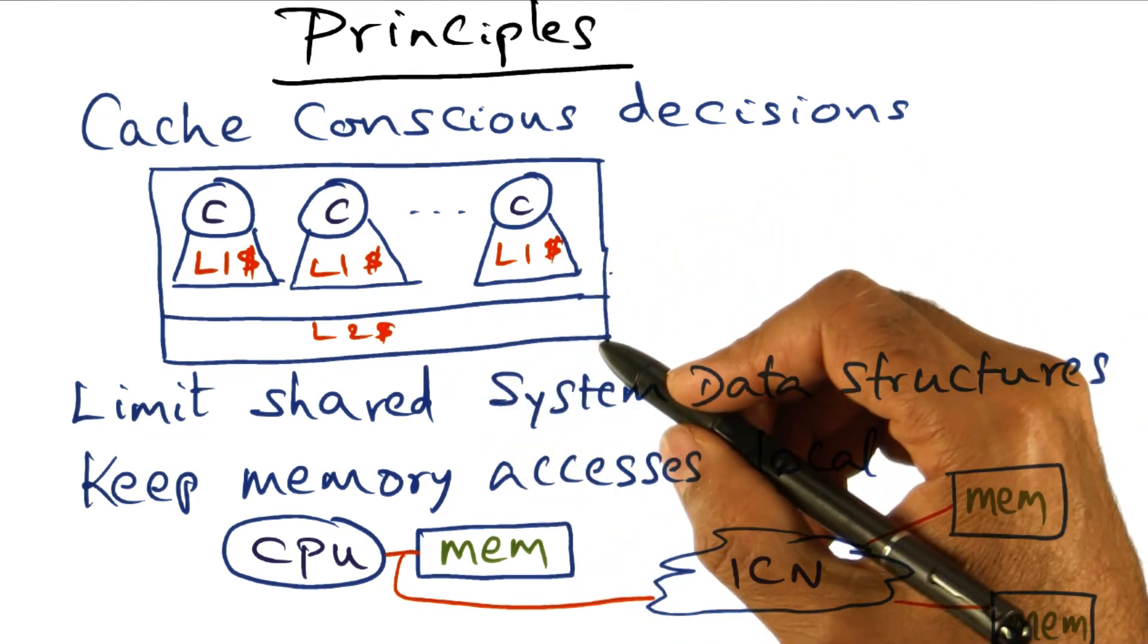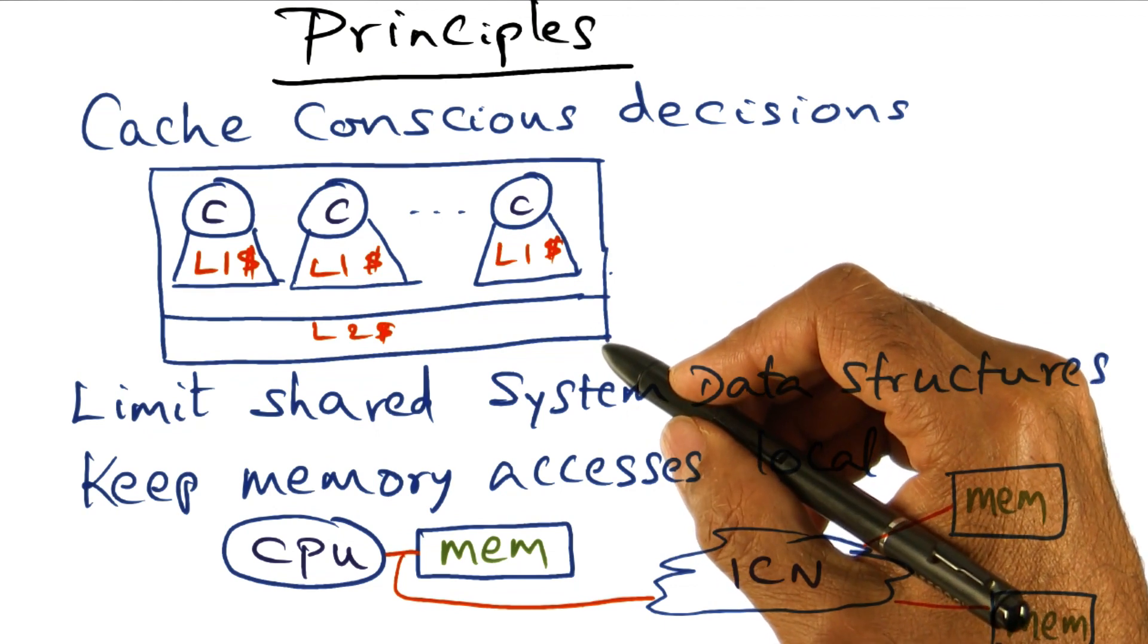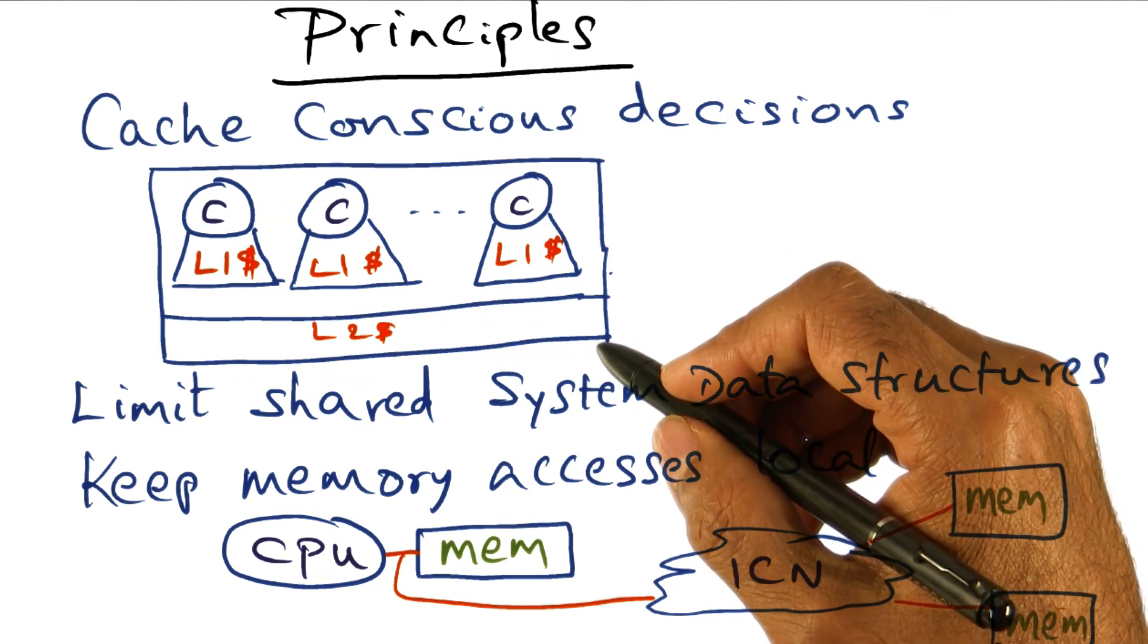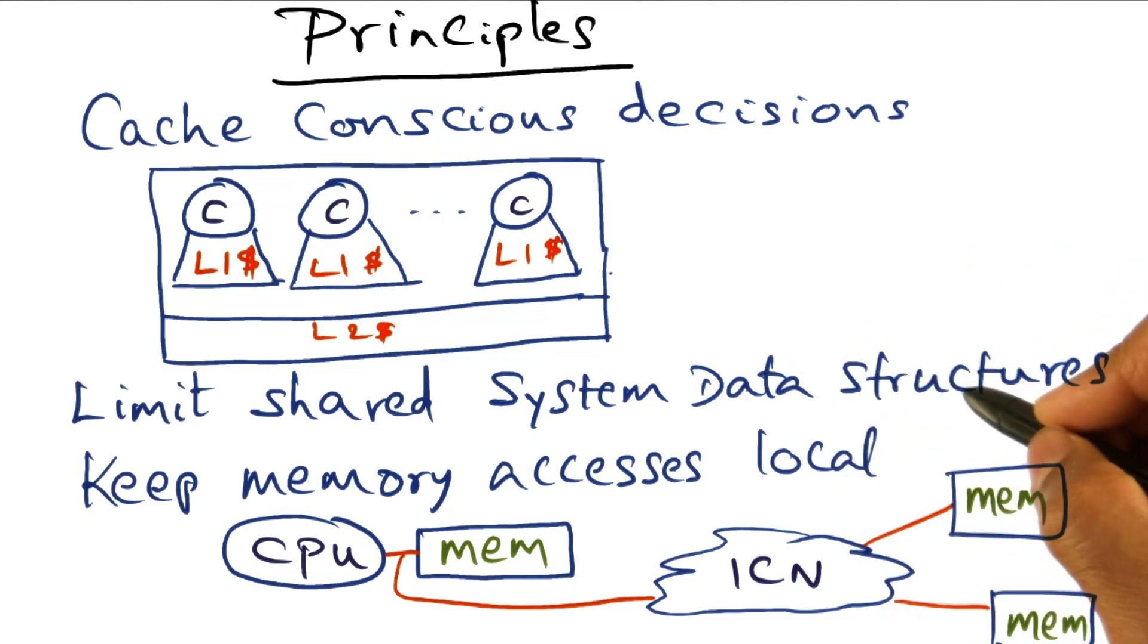And you want to reduce the amount of sharing of data structures. If you reduce the amount of sharing of data structures, you're reducing contention. So limit the amount of sharing to system data structures.